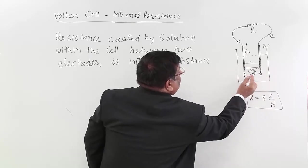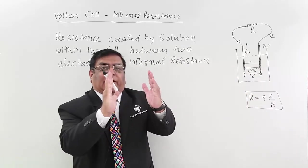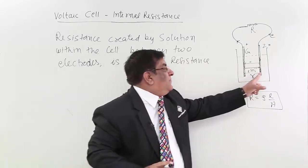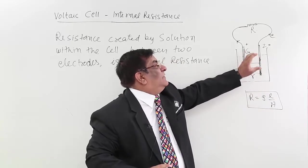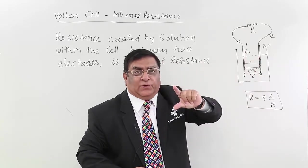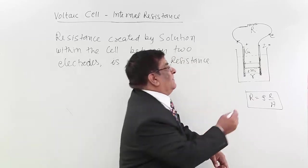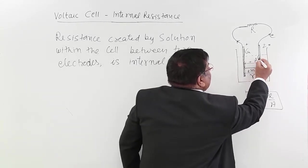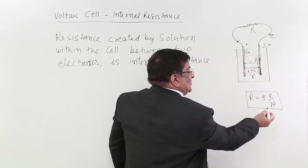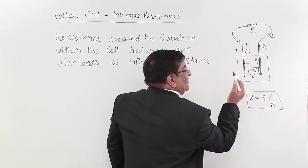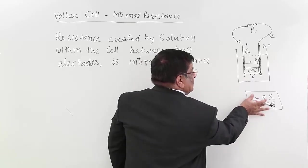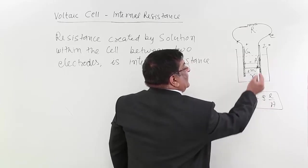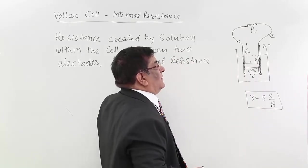So if the distance between the electrodes increase, internal resistance will increase. If area of the electrode which is dipped in the solution becomes larger and larger, the resistance will decrease. If area becomes larger, resistance will decrease.